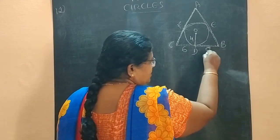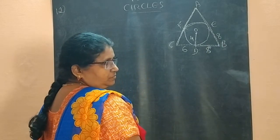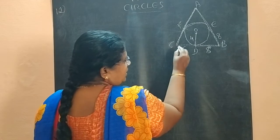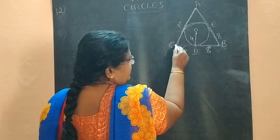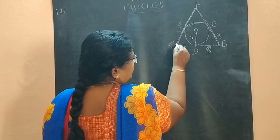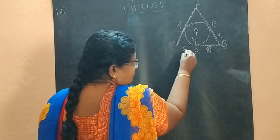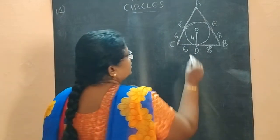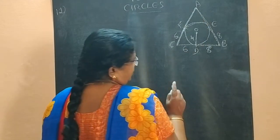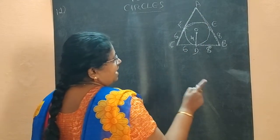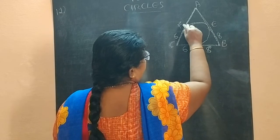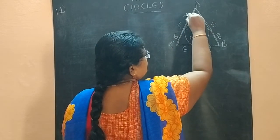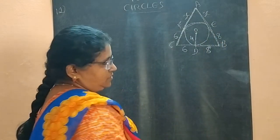B is an external point. From B, BD is one tangent and BE is another tangent. By Theorem 10.2, tangents are equal in length. So when BD is 8, BE is also 8. Similarly, C is an external point. From C, one tangent is CD and another is CF. When CD is 6, CF is also 6. A is an external point — from A, the tangents are AE and AF. Both are unknown, so let us call them X.